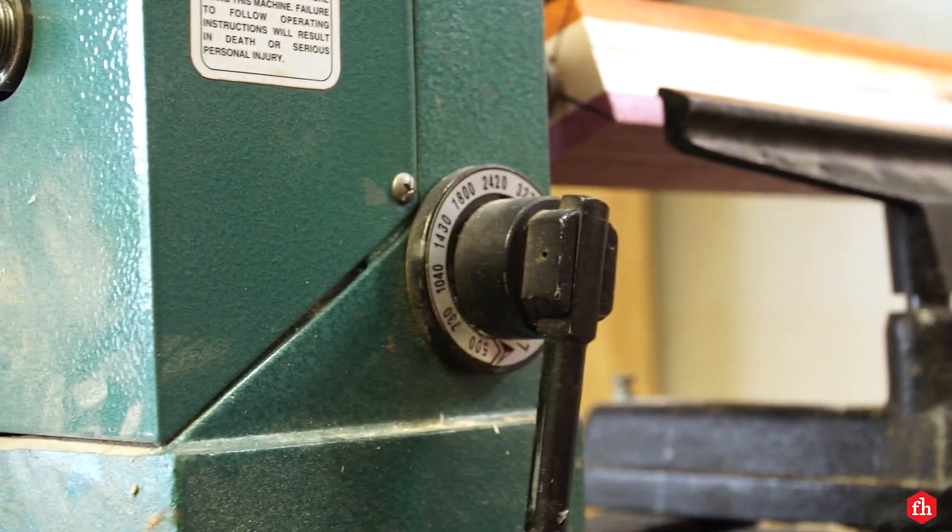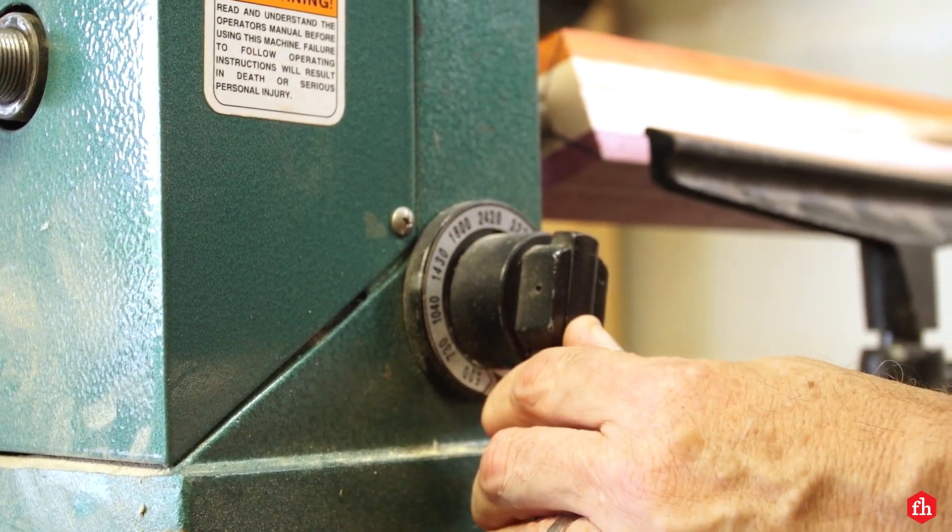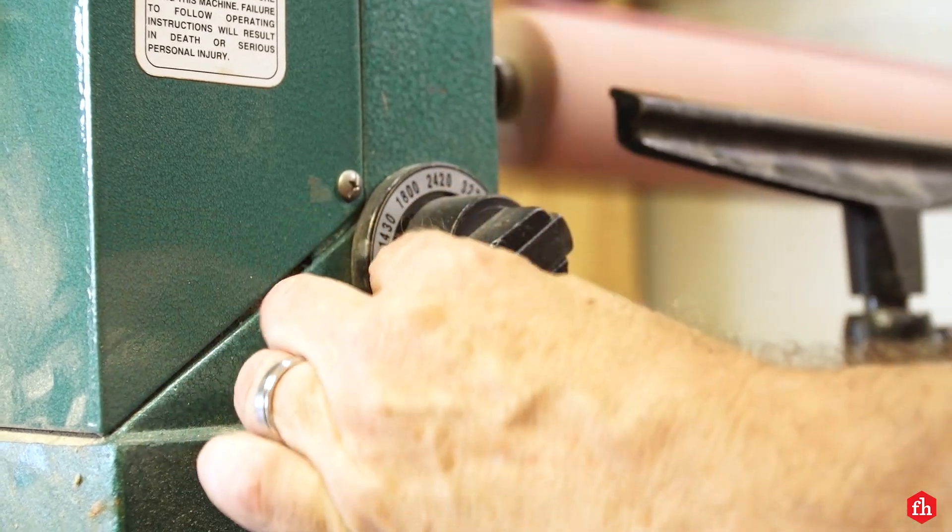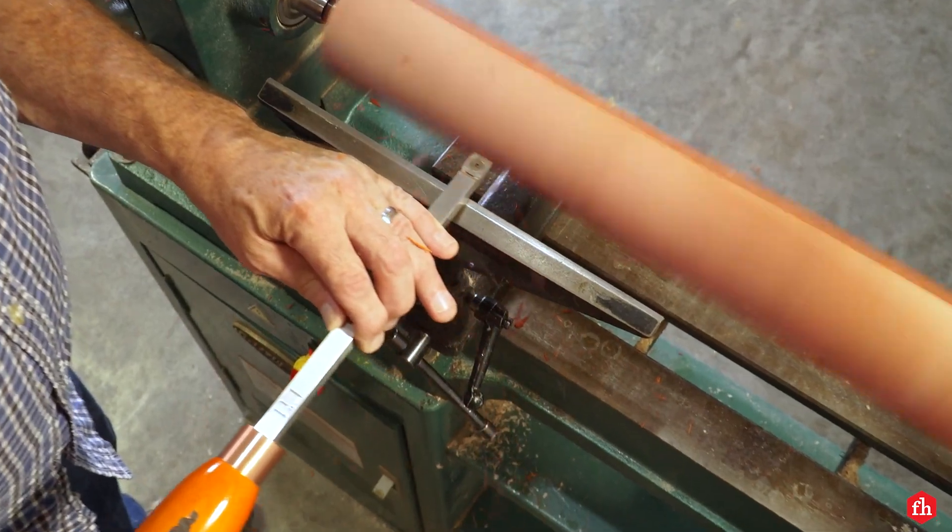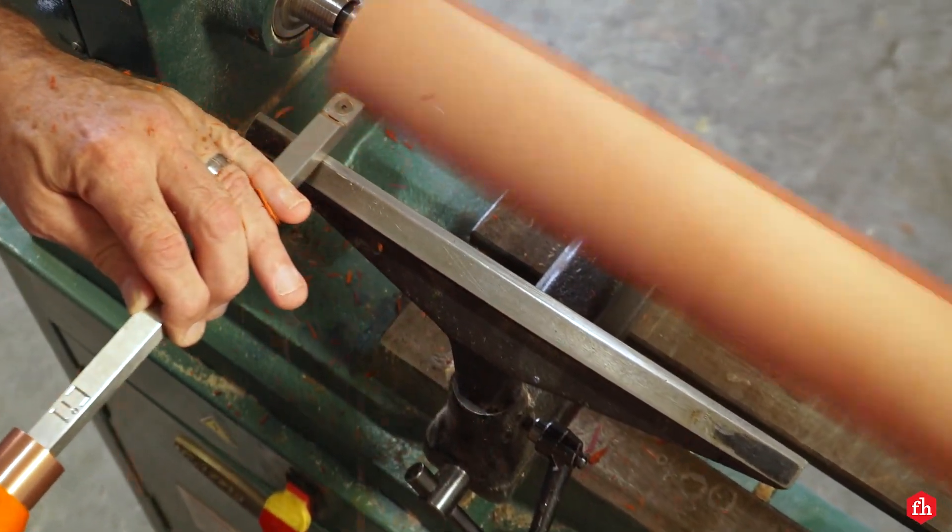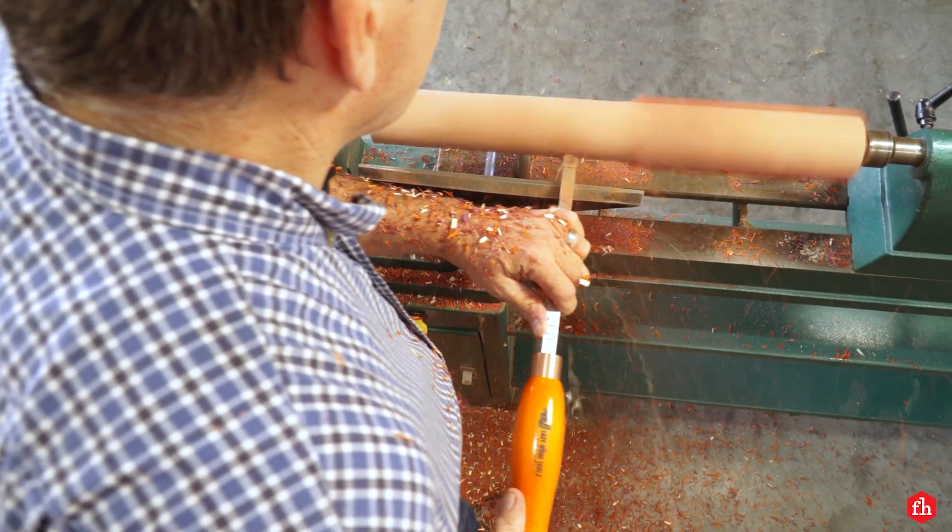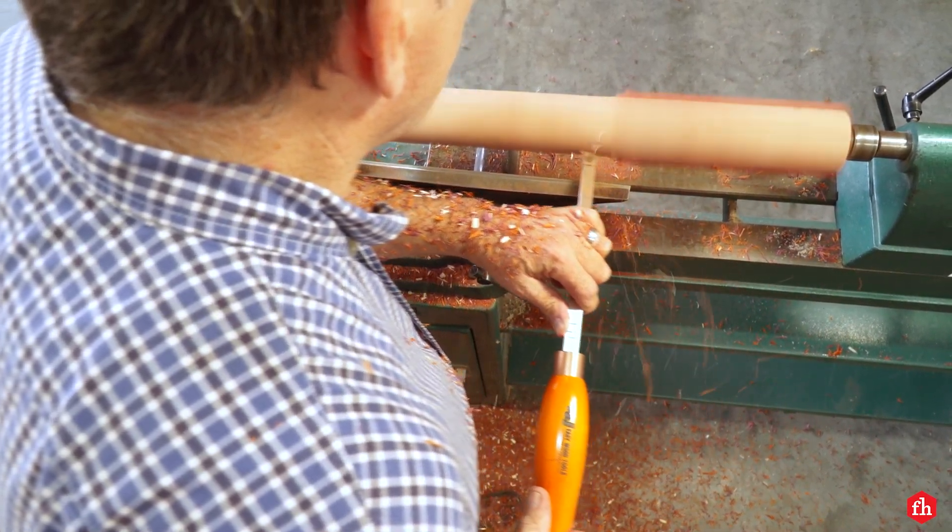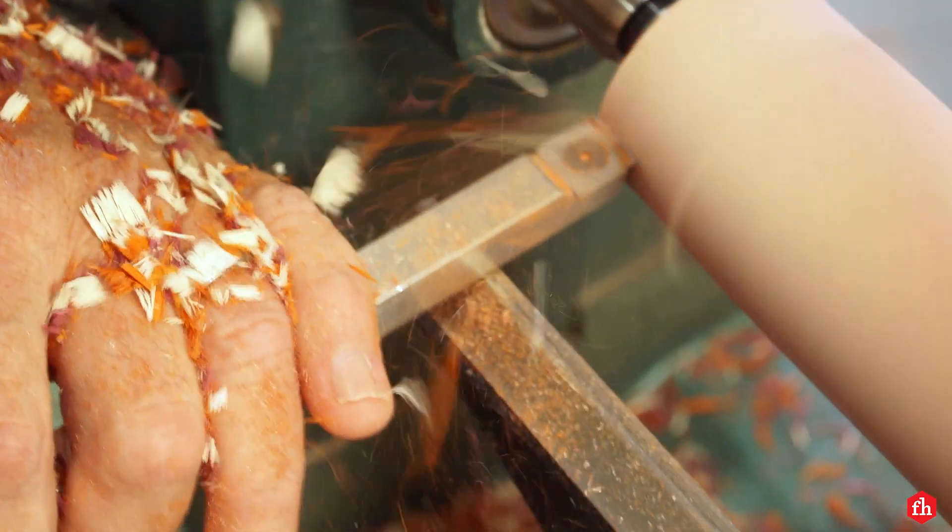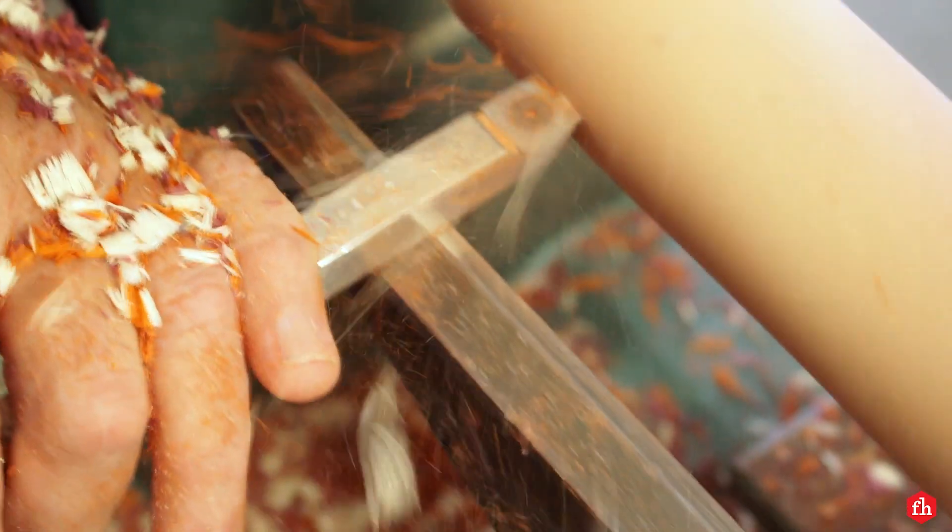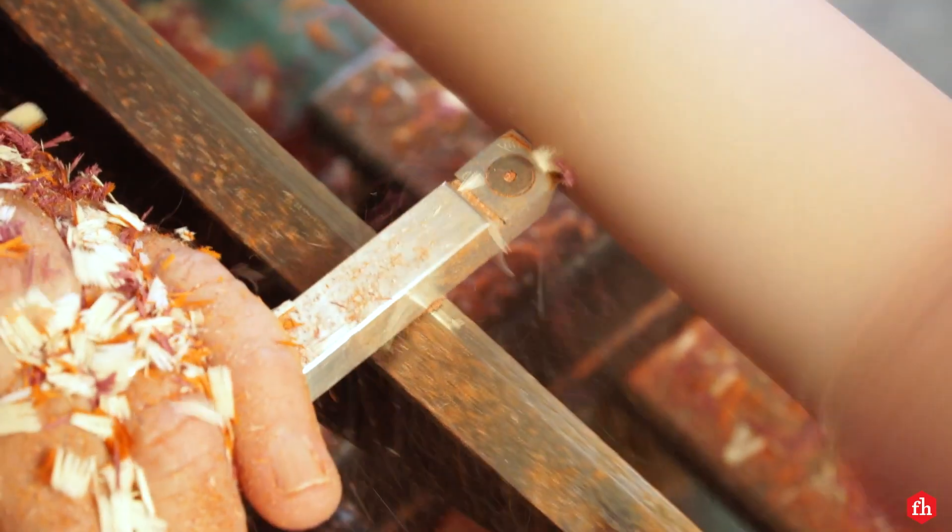For roughing my turning blank, I'm going to set my speed between 900 and 1,000. It's okay to take your time with this. Don't be in a hurry. Just apply even pressure with the tool, moving it from left to right and right to left until it becomes a cylinder.